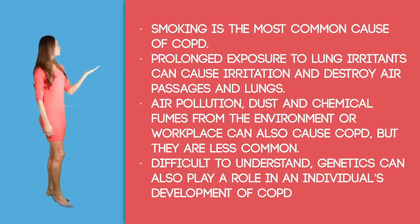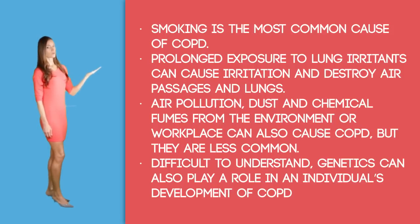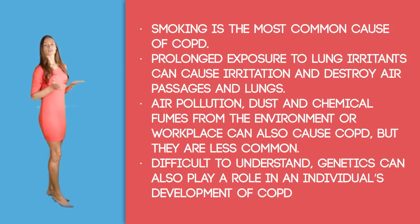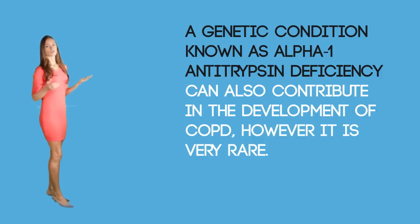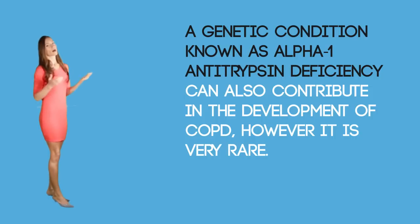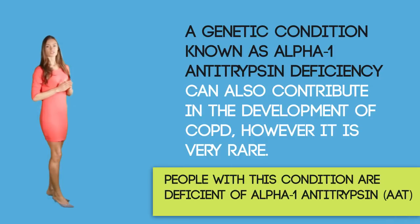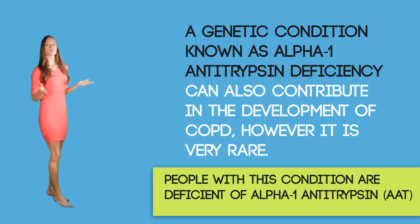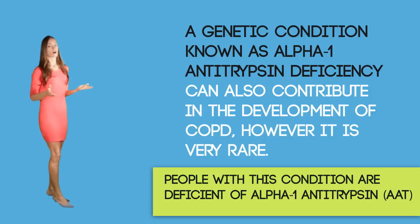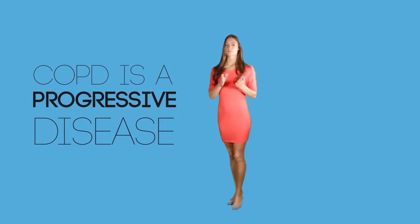Genetics can also play a role in an individual's development of COPD, even if the person has never smoked or been exposed to strong lung irritants in the workplace. There is a genetic condition known as alpha-1 antitrypsin deficiency which can also contribute to the development of COPD, though it is very rare. People with this condition are deficient in alpha-1 antitrypsin, also known as AAT, which is a protein made in the liver. Combined with smoking or lung irritants, this condition can destroy the lungs and cause COPD.